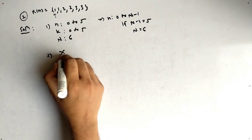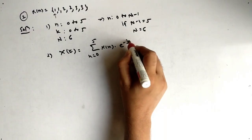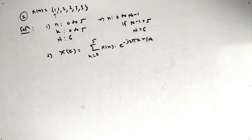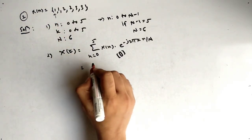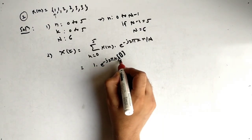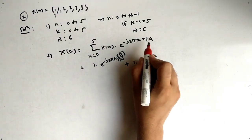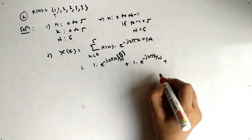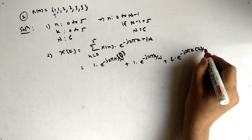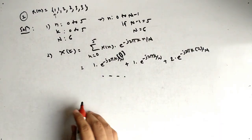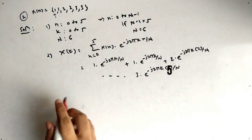Applying the formula: X[k] = summation from n = 0 to 5 of x[n] times e raised to minus j 2 pi k n by N. Substituting values: x[0] = 1 times e raised to 0, plus x[1] = 1 times e raised to minus j 2 pi k by N, plus 2 times e raised to minus j 2 pi k times 2 by N, continuing up to the last term 3 times e raised to minus j 2 pi k times 5 by N.